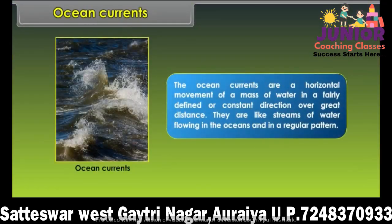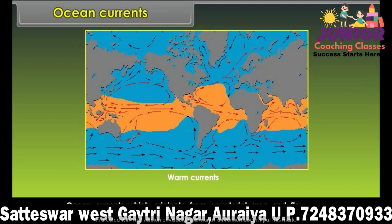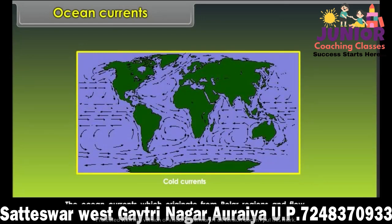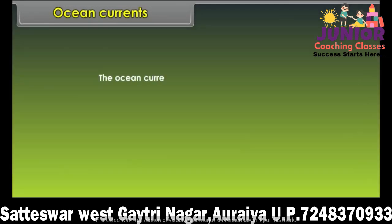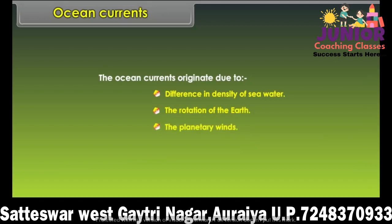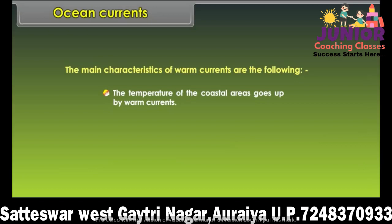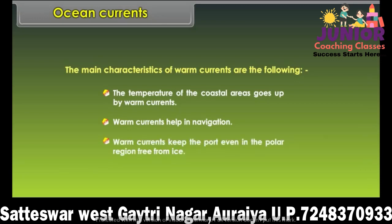Ocean currents are a horizontal movement of a mass of water in a fairly defined or constant direction over great distances — like streams of water flowing in the oceans in a regular pattern. Ocean currents originating from the equatorial area and flowing towards polar areas are known as warm currents. Currents originating from polar regions and flowing towards equatorial areas are cold currents. Ocean currents originate due to differences in the density of seawater, the rotation of the earth, and planetary winds. Warm currents raise the temperature of coastal areas, help in navigation, and keep ports even in polar regions free from ice.